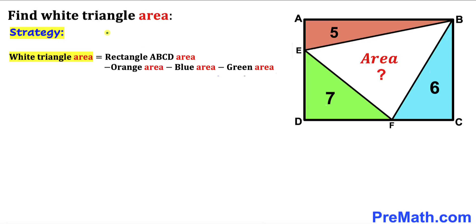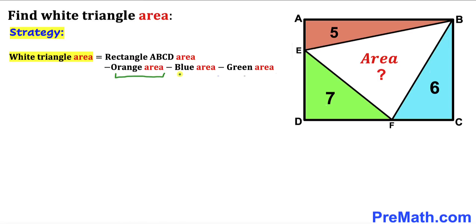Let's get started. The action plan: since we are interested in calculating the area of this white triangle, we can see that the white triangle area equals the area of the whole rectangle ABCD minus the area of the orange triangle, minus the area of the blue triangle, and finally minus the area of the green triangle. We know the orange area is 5 cm², the blue is 6 cm², and the green is 7 cm².